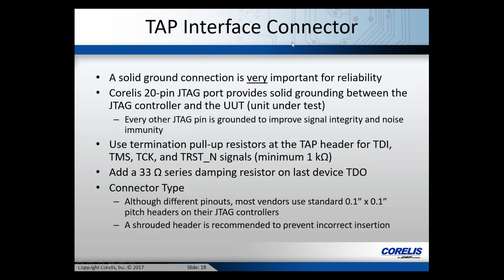Now we'll cover the TAP interface connector, which is the interface between the Corellis controller and the unit under test. A solid ground connection is very important for reliability of your test procedures. Corellis utilizes 20-pin headers that provide ground between every JTAG control pin — every other pin is ground to improve signal integrity and noise immunity, so when you build a ribbon cable every other pin is a ground pin.